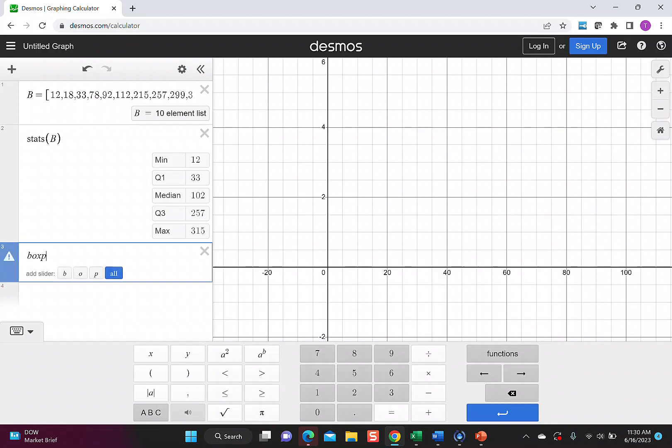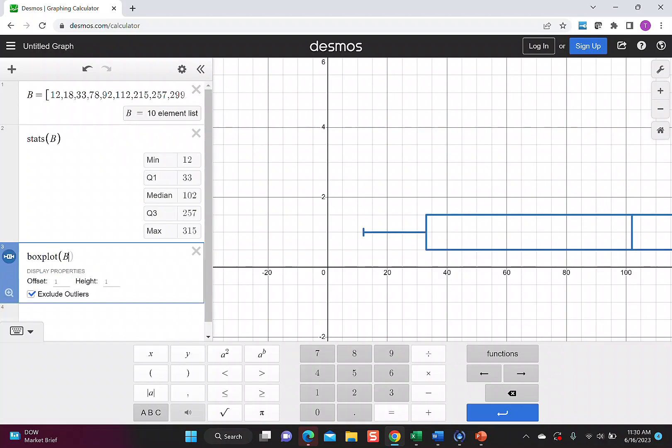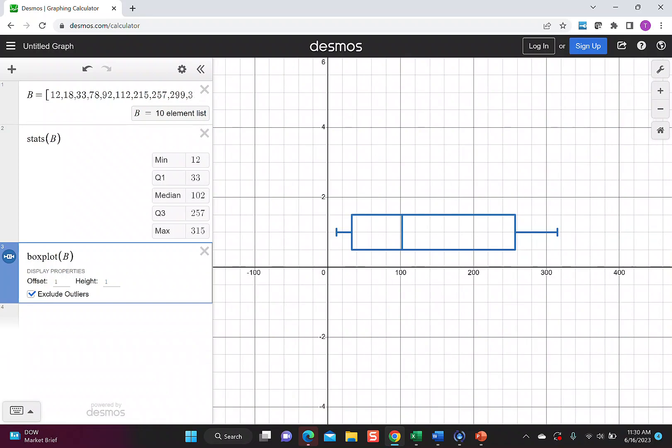To visualize that, I type box plot, put in B, and remember to hit zoom. We have it checked to exclude outliers, which means this time there are not any outliers. I don't see any extra numbers drawn anywhere. Quartile 1 is 33, the median is 102, quartile 3 is 257. Sometimes they refer to a box plot as a box and whiskers to show these little lines that extend on each side. On the left side, this extends to the minimum of 12. On the right side, this extends to the maximum of 315. So all of the data is represented by this one visual box plot.